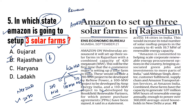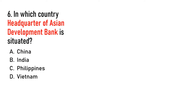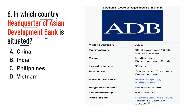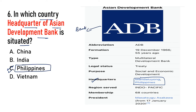Next: kis country mein Asian Development Bank ka headquarters hai — China, India, Philippines, ya Japan? Answer will be C — Philippines. Yeh news mein hai kyunki ye international banks har desh ka economic review karti hain — GDP growth aur reports deti hain.